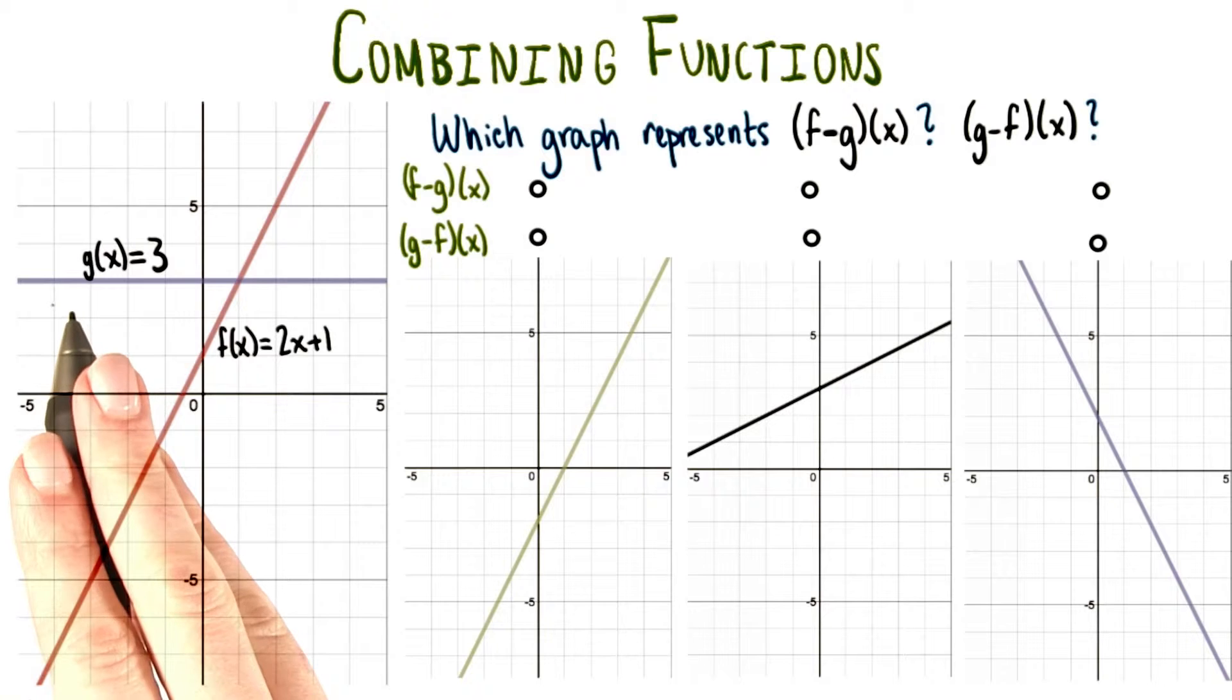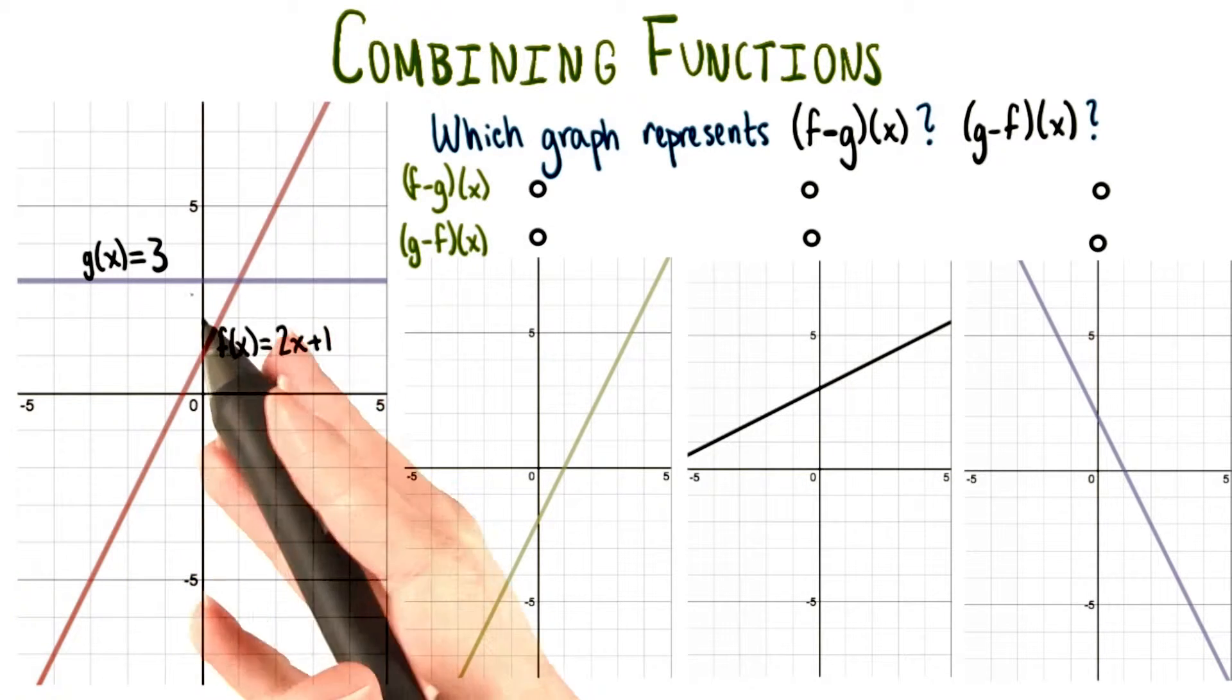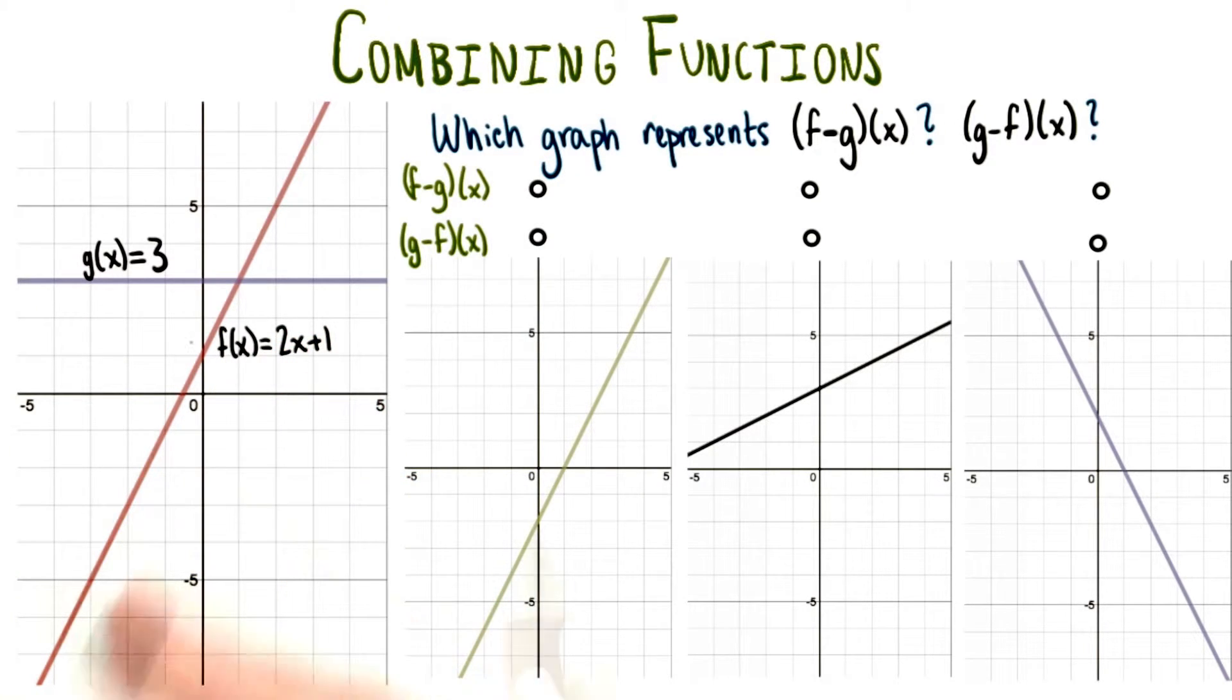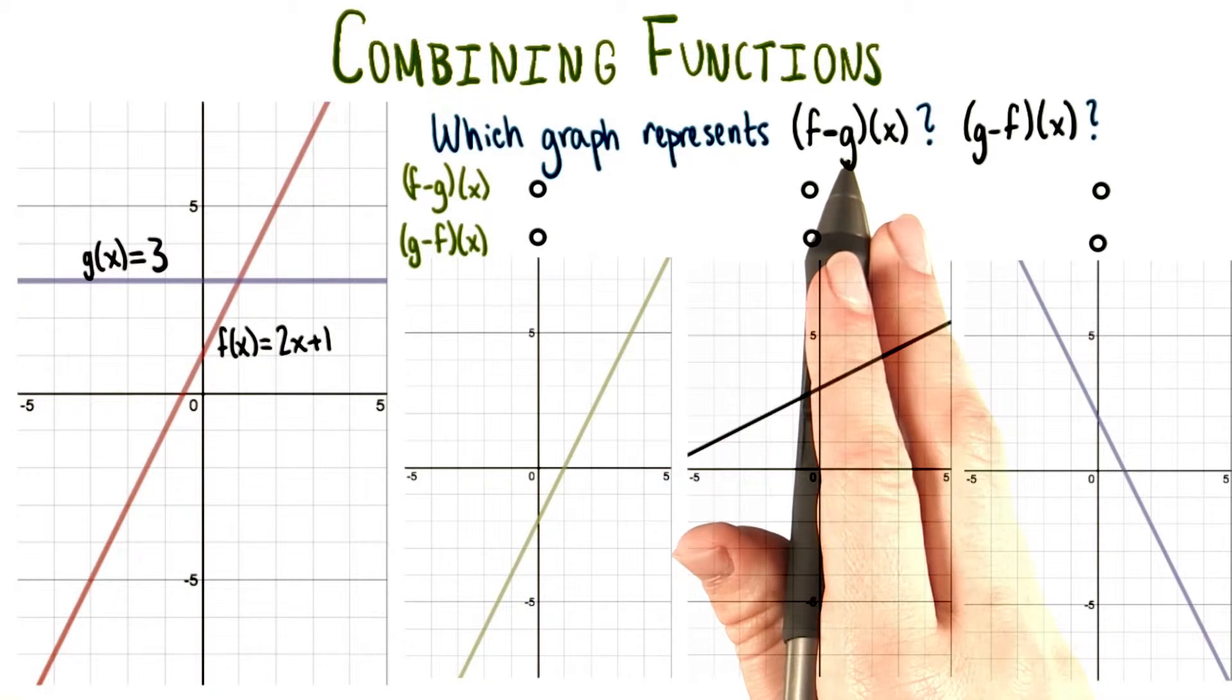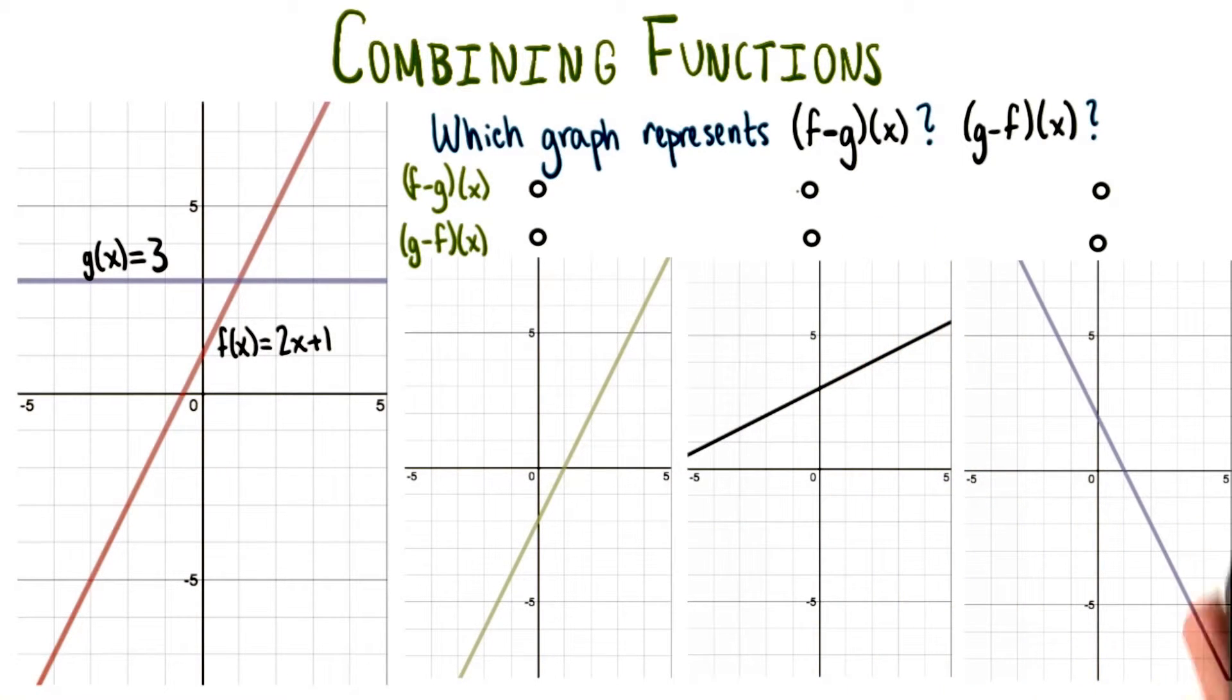Working with the same two functions as the last quiz, what if we want to subtract one of these functions from the other? One of these three graphs represents f minus g of x, and another one of them is g minus f of x. Which one is which?